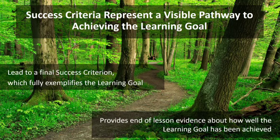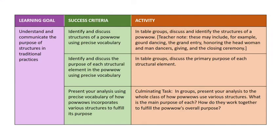Let's take a look at another example. For this lesson, the success criteria and activities are laid out sequentially from top to bottom to indicate the series of expectations and experiences students will encounter during the course of the lesson. Each activity and related success criteria proceed in connected steps to the final culminating task at the end of the lesson, which will provide the most conclusive evidence of where student learning is in relation to the learning goal. Feel free to pause the video here to read this thoroughly.